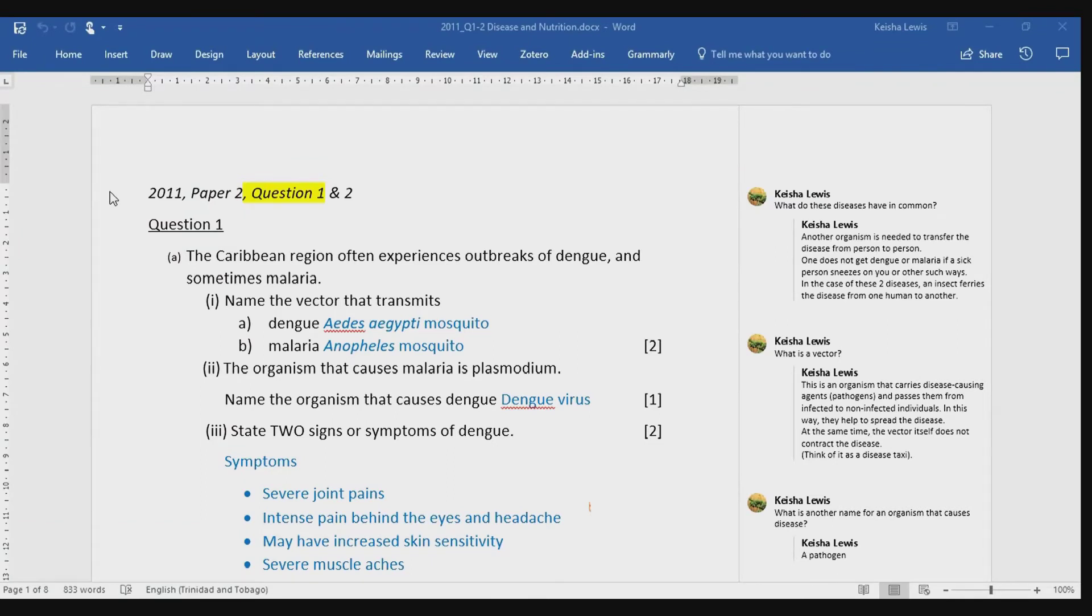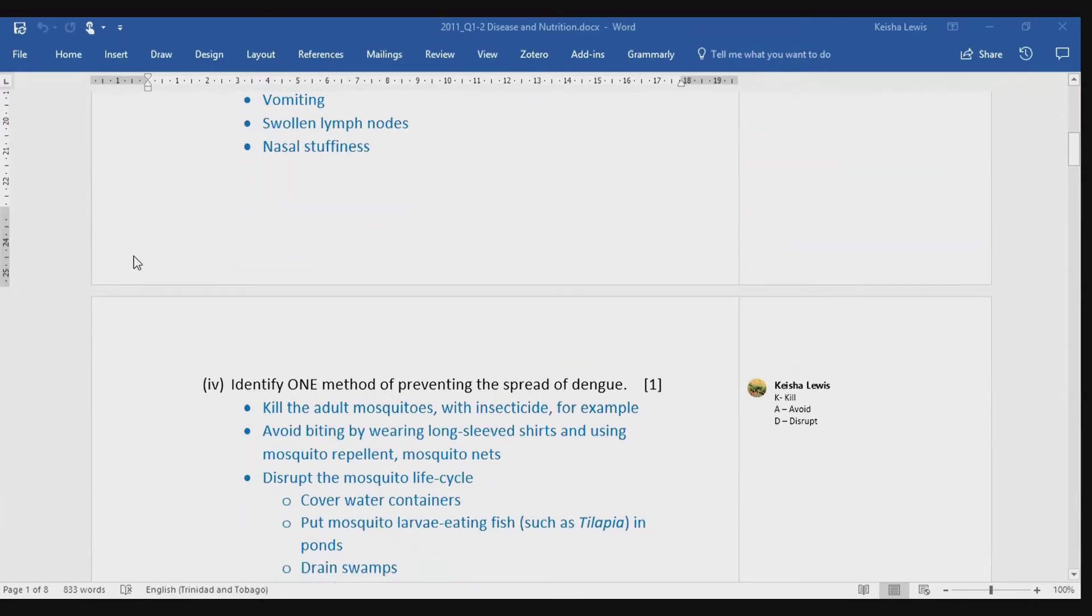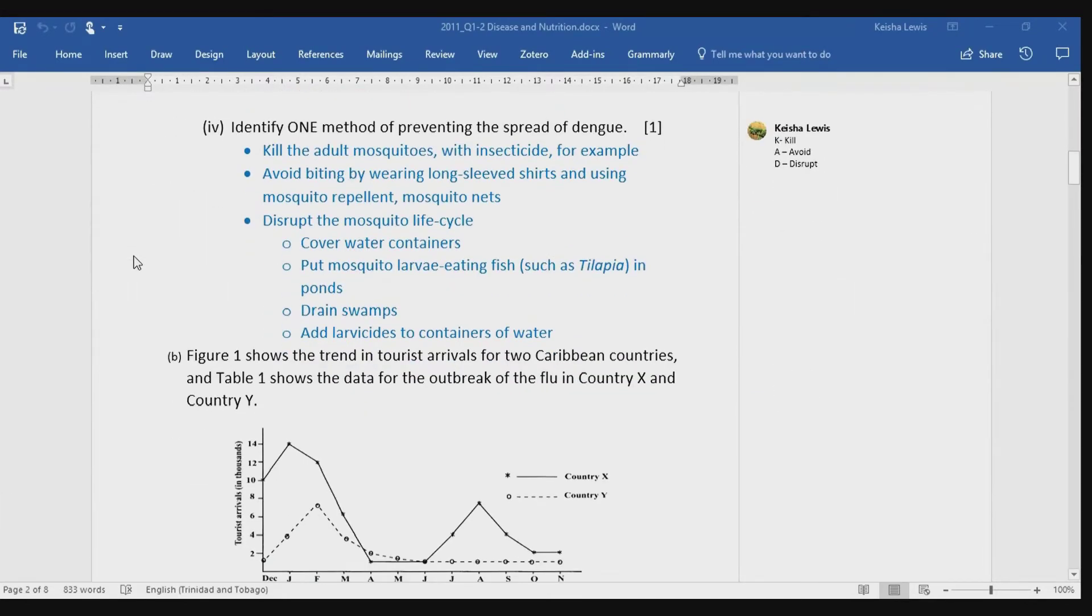In episode 1, we reviewed question 1, part A, and we got up to part 4, where we identified several methods of preventing the spread of dengue. And I also introduced an acronym, CAD, standing for Kill, Avoid, or Disrupt, to help you remember the various strategies you can use to control insect vectors.